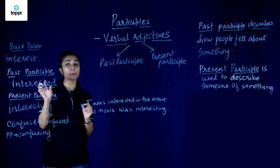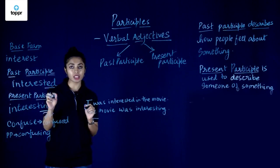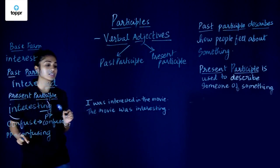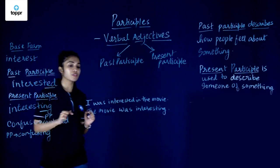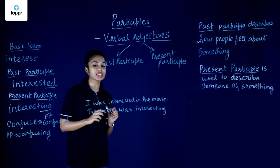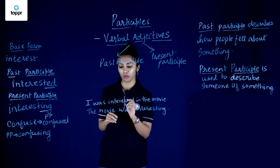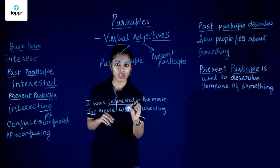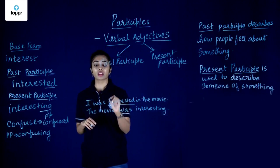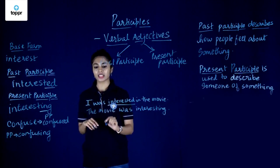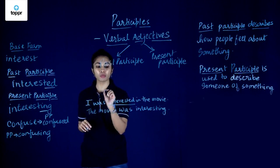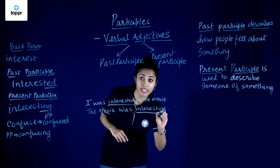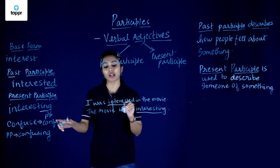I have used some of the past participle and the present participle in these sentences. The first sentence is: 'I was interested in the movie' — so 'interested' here is our past participle. The second sentence is: 'The movie was interesting' — and this is our present participle.